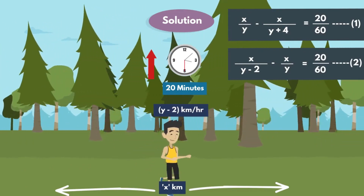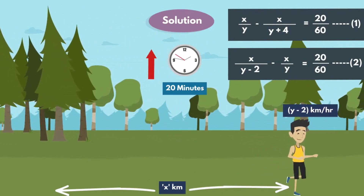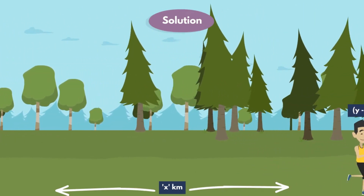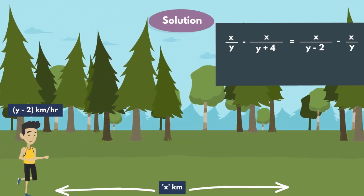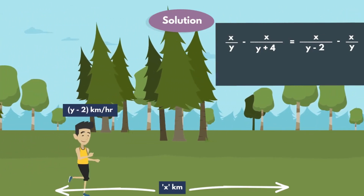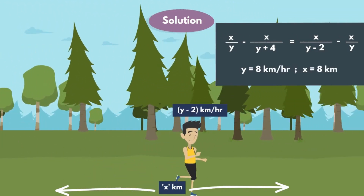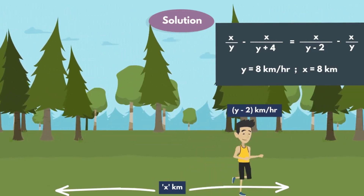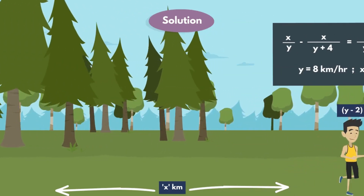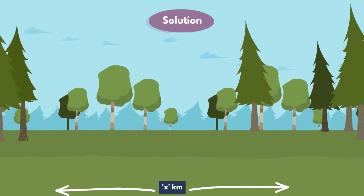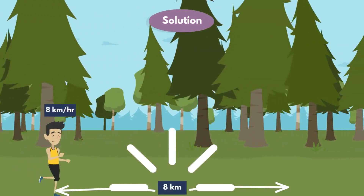So here, equating equations 1 and 2, we get x by y minus x by y plus 4 is equal to x by y minus 2 minus x by y. After simplifying the above equation, we get y equal to 8 km per hour, and x equal to 8 km. So the initial speed of the man is 8 km per hour, and the distance moved by the man is 8 km.